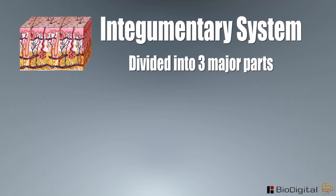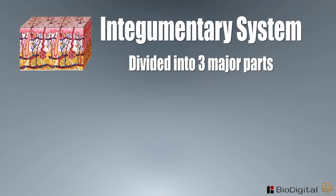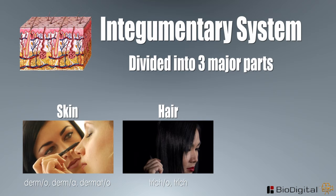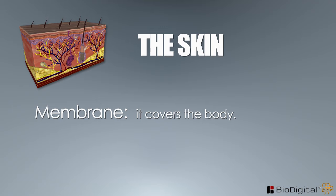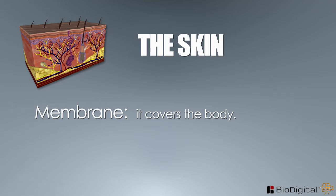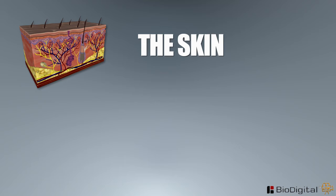This body system is divided into three major parts: the skin, the hair, and the nails. This system is known as a membrane because it covers the body, and an organ because it contains several tissues. For the purposes of this course, the system will be described as an organ with a variety of essential tissues.